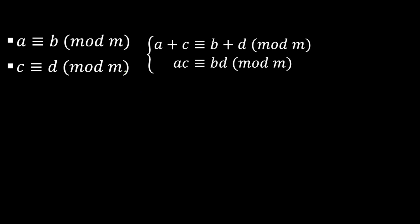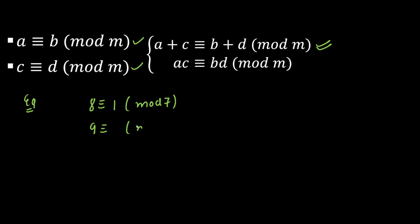The third property is: if A is congruent to B mod M, and C is congruent to D mod M, then I can immediately write A plus C is congruent to B plus D mod M. Also, AC is congruent to BD mod M. For example, 8 is congruent to 1 mod 7 — dividing 8 by 7 gives remainder 1. Similarly, 9 is congruent to 2 mod 7 — dividing 9 by 7 gives remainder 2.